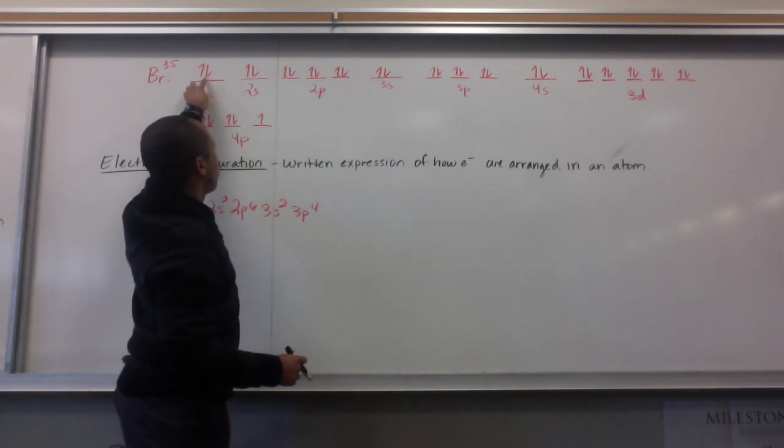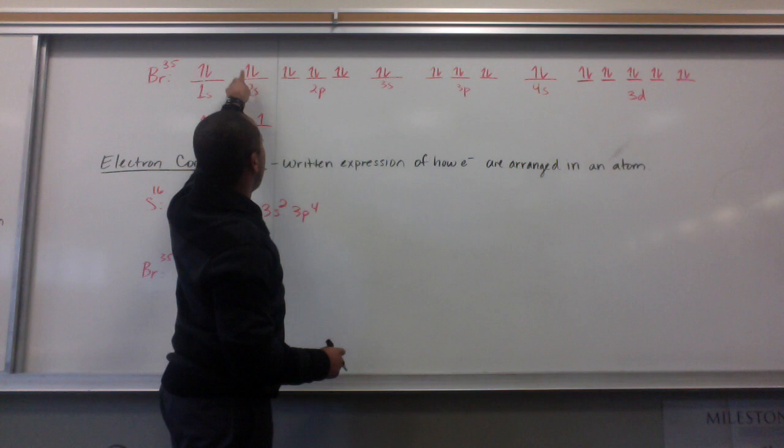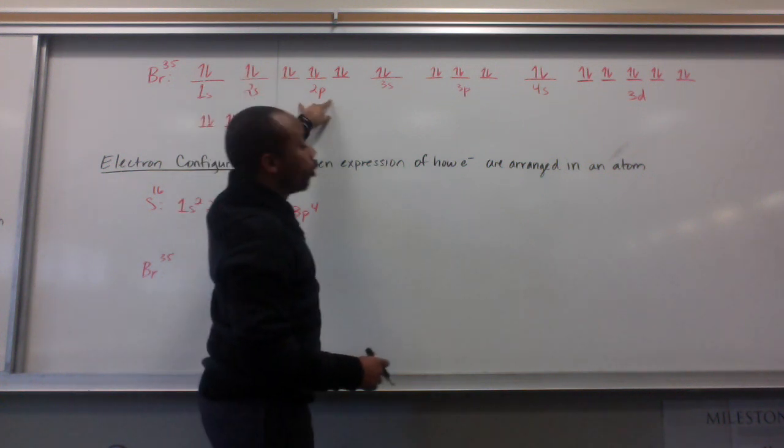I start at 1s. 1s holds two electrons total, one for hydrogen, one for helium. Then I go to 2s. 2s has one orbital as well. It holds two electrons for lithium and beryllium.